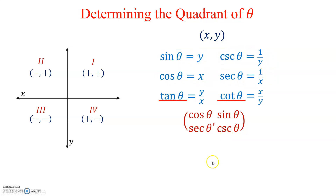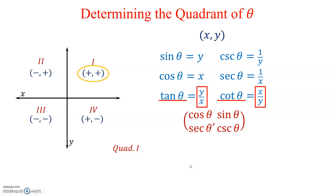Tangent and cotangent work with both x and y, so we'll look for patterns associated with them. In quadrant 1, the signs are positive/positive — the signs are the same — so a ratio like tangent or cotangent gives positive divided by positive, which is always positive. In quadrant 2 the signs are negative/positive — the signs are different — and dividing different signs always gives a negative.